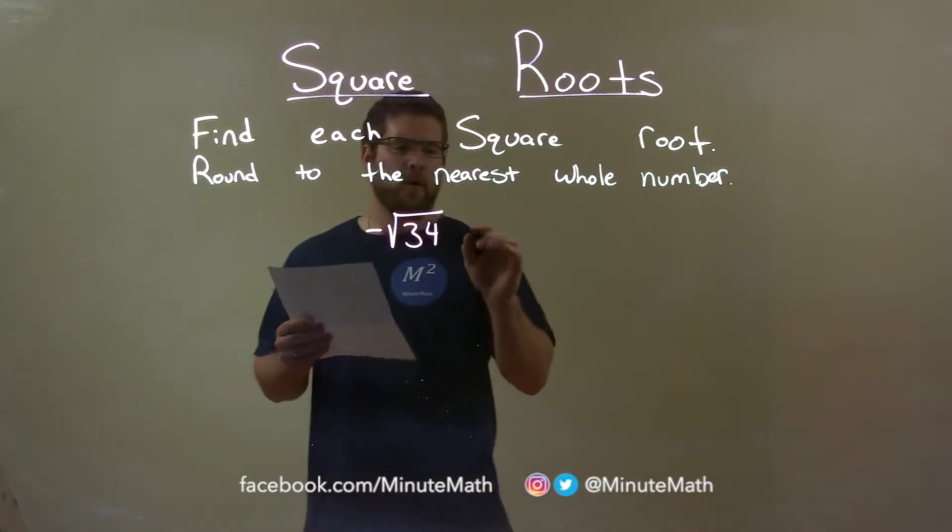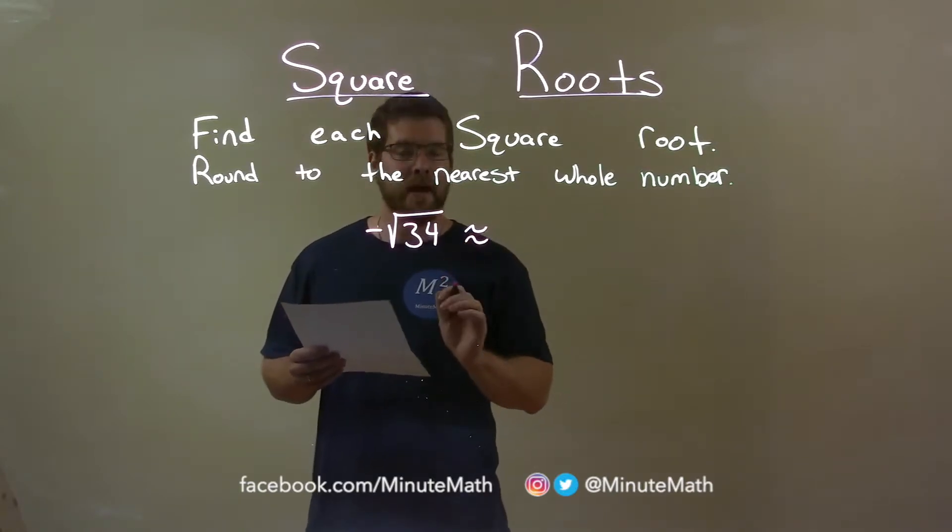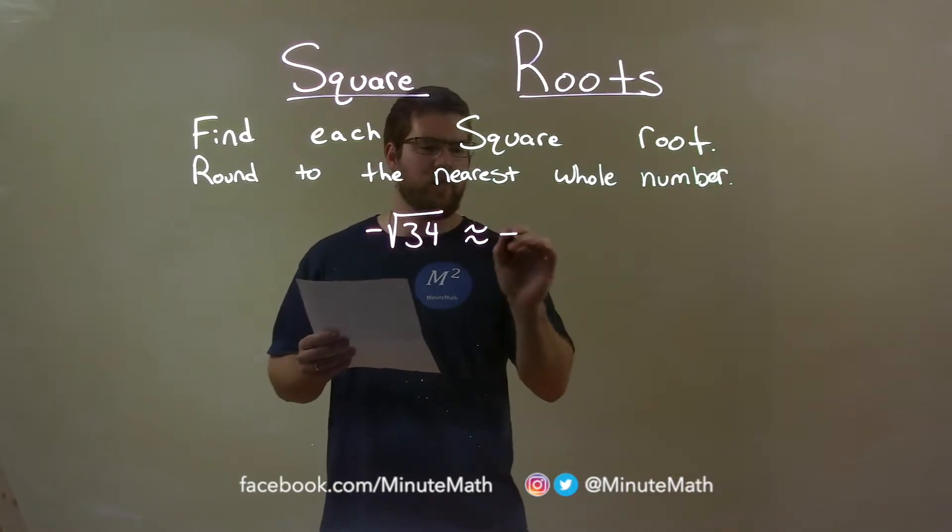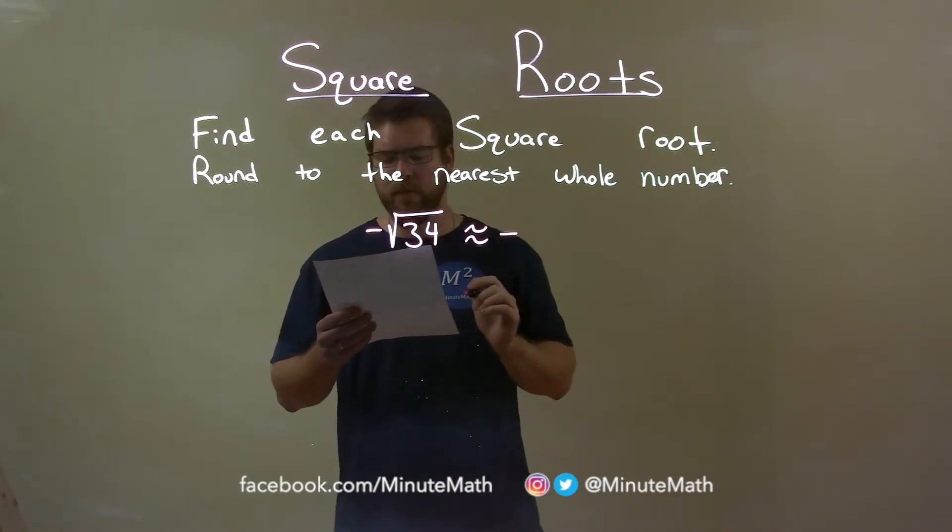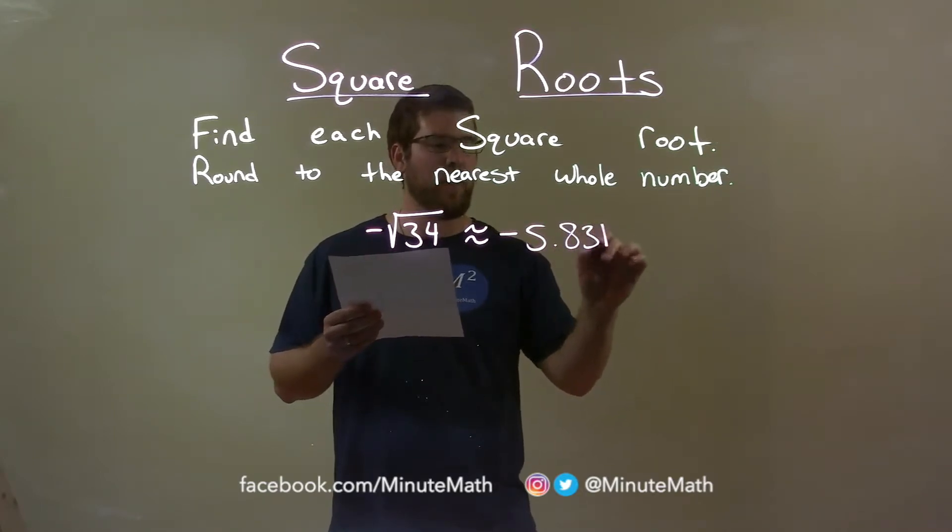Alright, well when we plug square root of 34 in our calculator, we're going to get a decimal. So this is going to be an approximation. The negative we make sure we bring over and the square root of 34 is 5.831 approximately.